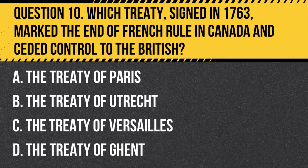Question 10. Which treaty, signed in 1763, marked the end of French rule in Canada and ceded control to the British? A. The Treaty of Paris. B. The Treaty of Utrecht. C. The Treaty of Versailles. D. The Treaty of Ghent.